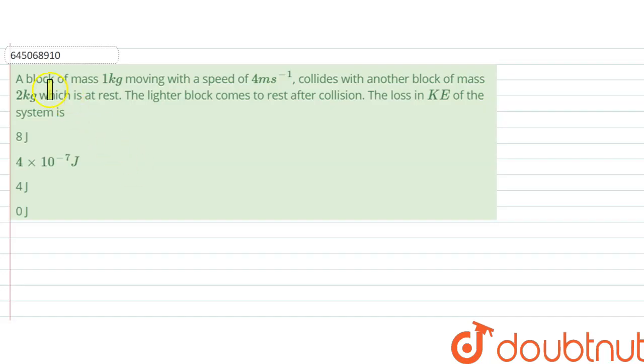The question says a block of mass 1 kg moving with a speed of 4 meter per second collides with another block of mass 2 kg which is at rest. The lighter block comes to rest after collision. The loss in kinetic energy of the system is what?